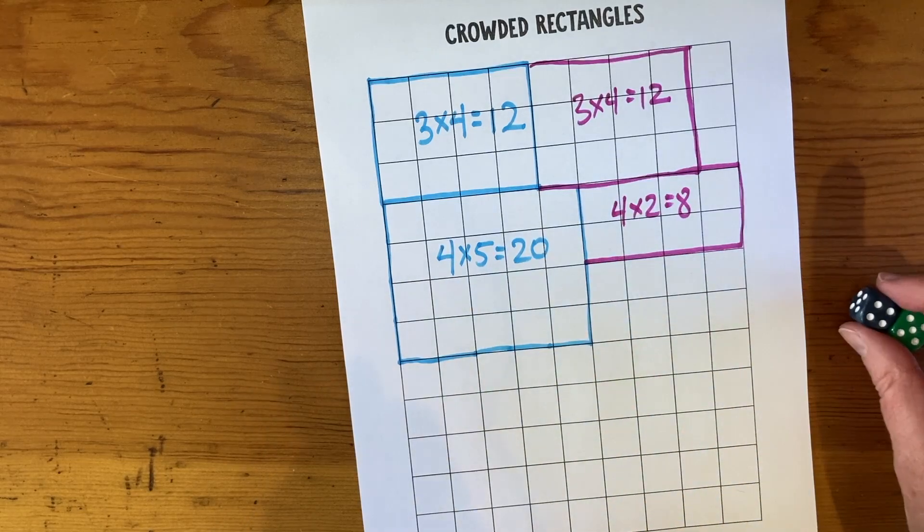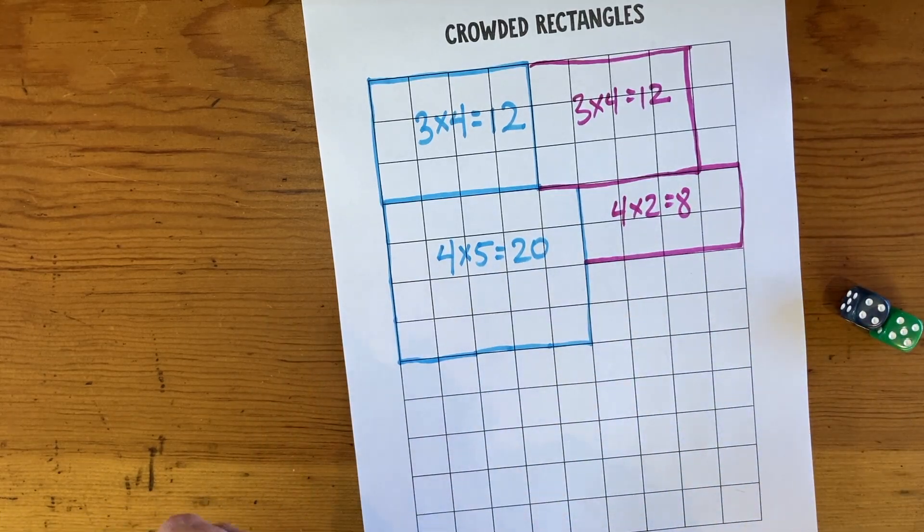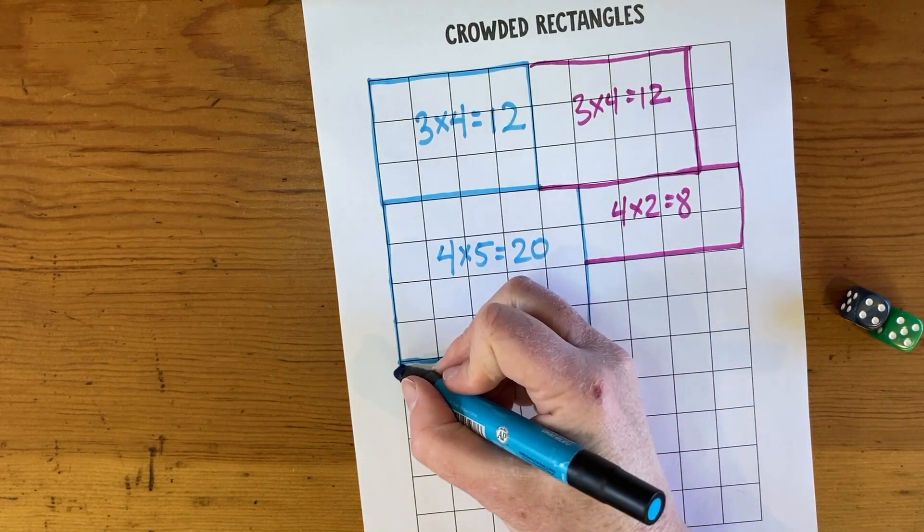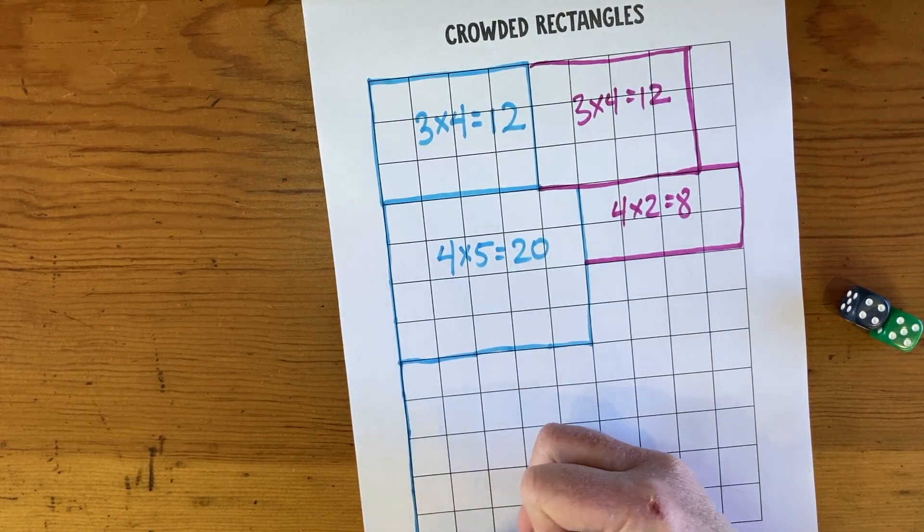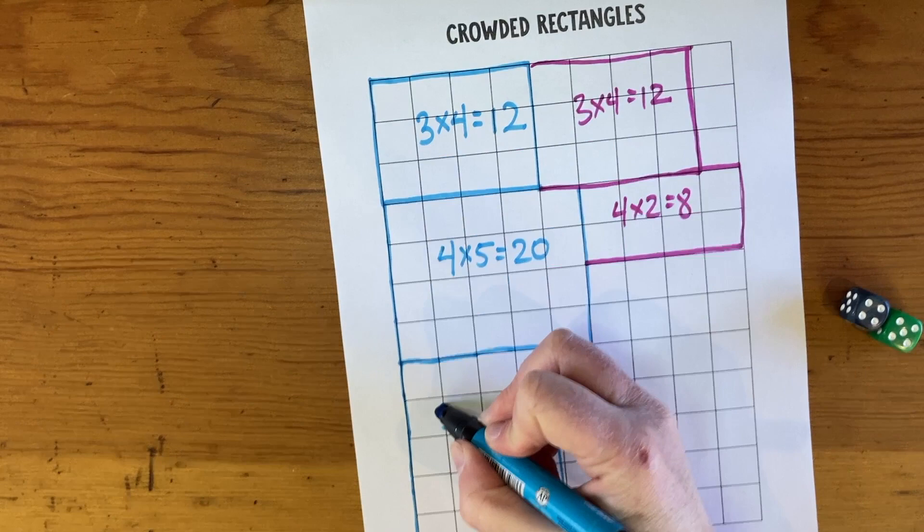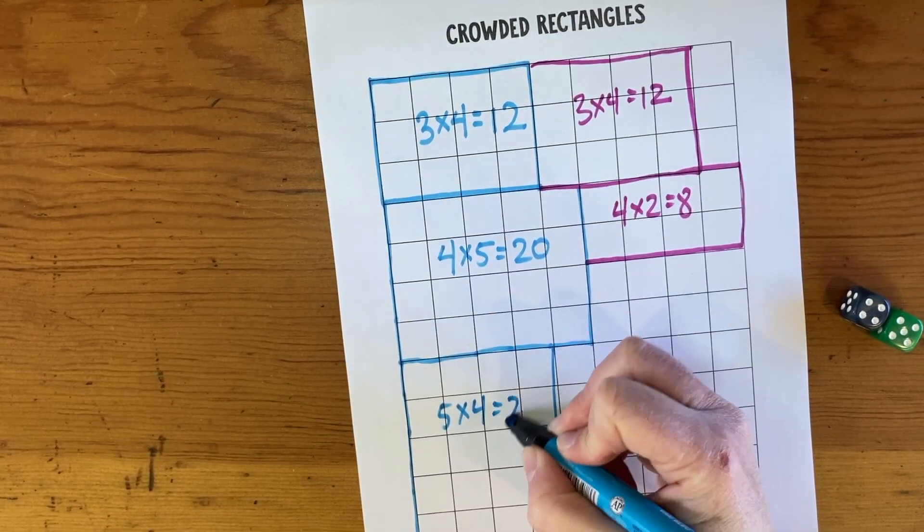So let's see what happens next. Oh, we're rolling some big ones, five times four is 20 again. Five times four equals 20.